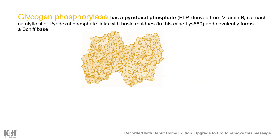Glycogen phosphorylase has a pyridoxal phosphate group (PLP), derived from vitamin B6, at its catalytic site. It has two catalytic sites and each has PLP, which plays a very important role in the enzymatic reaction mechanism. PLP forms a Schiff base with the basic amino acid lysine-680, which is important for the catalytic function. Glycogen phosphorylase breaks alpha-1,4 glycosidic linkages.